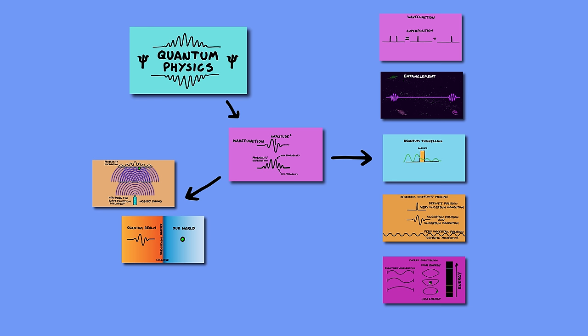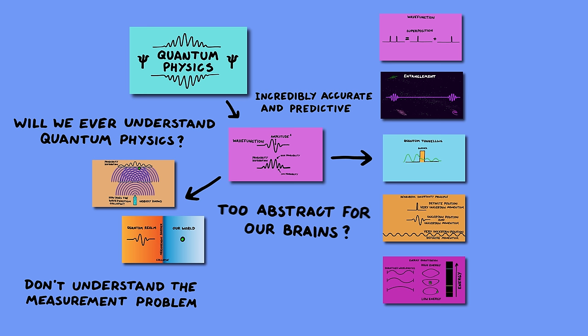But if you've got more questions, I'll be on the comments below, so ask away. For me, the weird thing about quantum physics is that on the one hand it's incredibly accurate and predictive, but also it's got giant holes in it like the measurement problem, which we just don't understand. So we can wonder, will we ever actually understand quantum physics, or is it just too abstract for our human brains to comprehend?